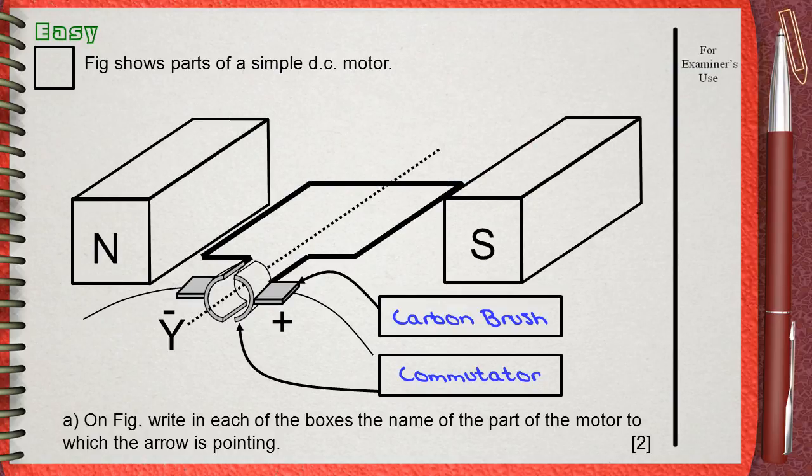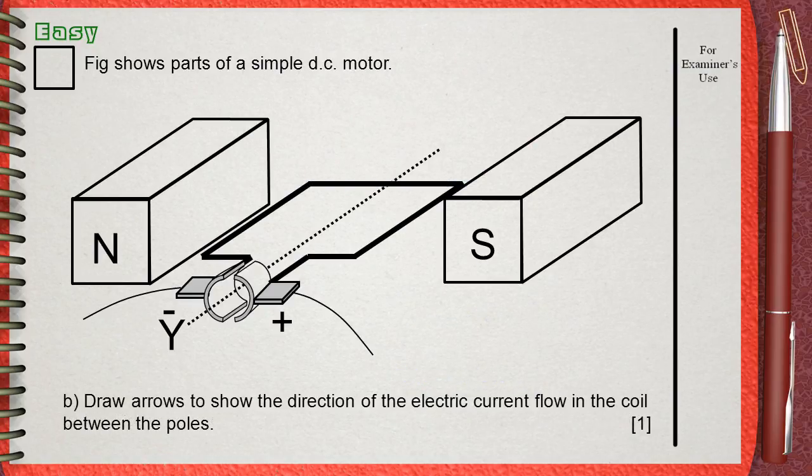This is the first question. The second question B: Draw arrows to show the direction of electric current flow in the coil between the poles.